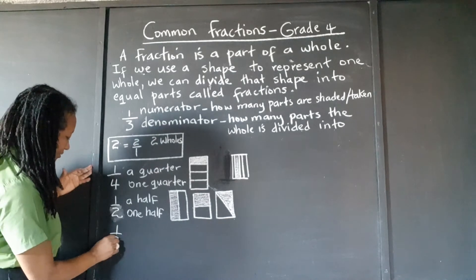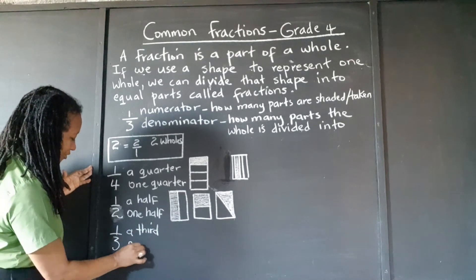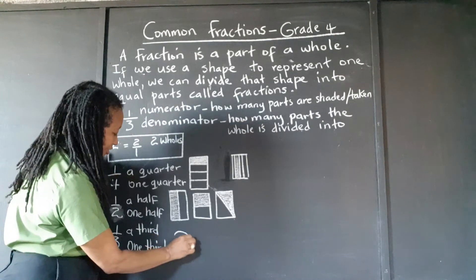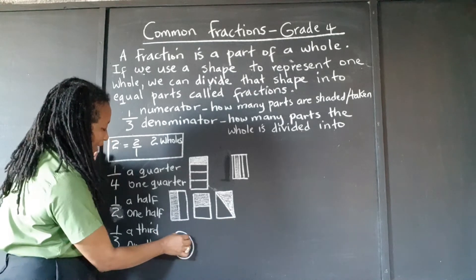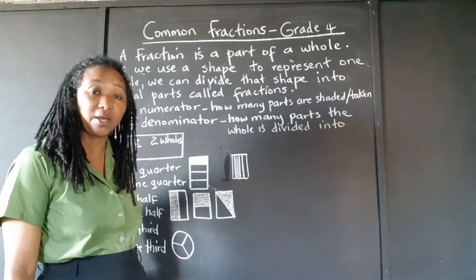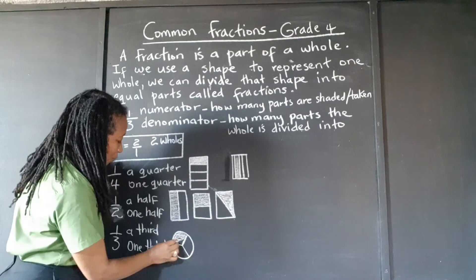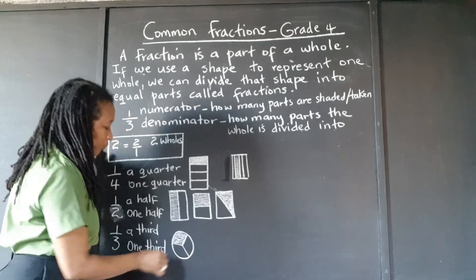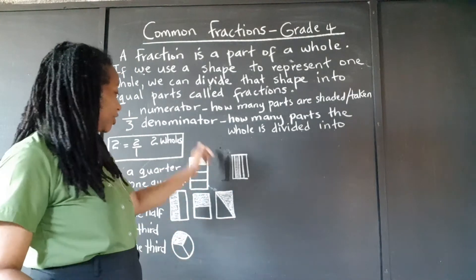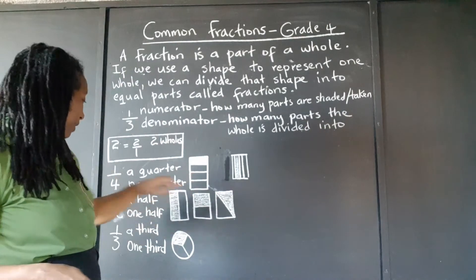One third is another common fraction. Let's use a circle this time — you can use any shape, you just have to try to make the parts equal. That's the important thing. We're cutting it into three equal parts and shading one of the parts. Whichever shape you use, you have to make sure the parts are equal. For example, if you cut a rectangle diagonally, you don't get equal parts, which is why I erased that one.